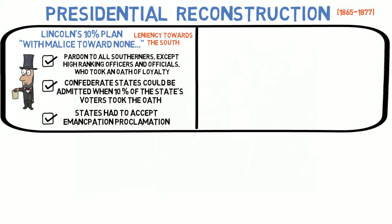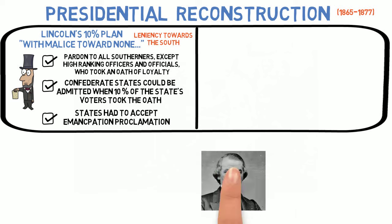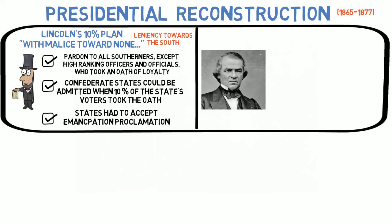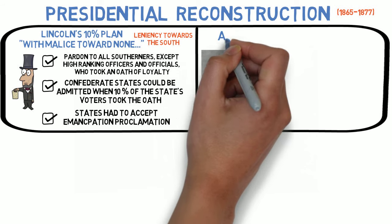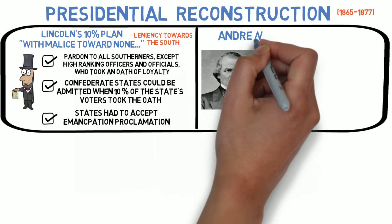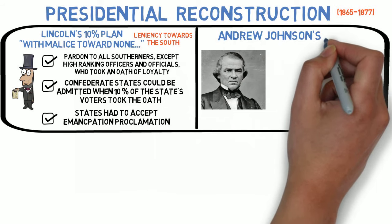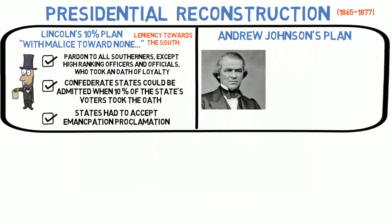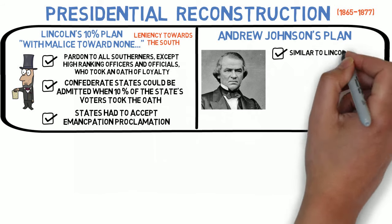Lincoln's plan may have lasted, except he was assassinated by John Wilkes Booth on April 15, 1865. His Vice President, Andrew Johnson, took over. Johnson's plan was similar to Lincoln's in that it was very lenient towards the South, and many argued too lenient.